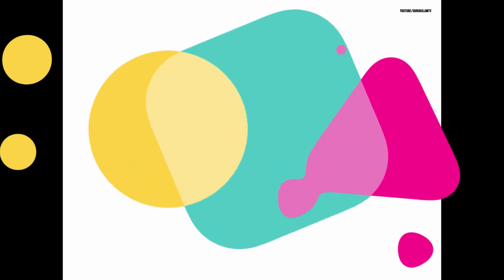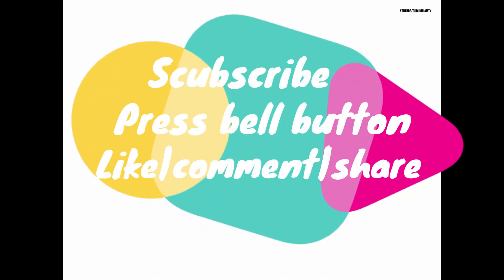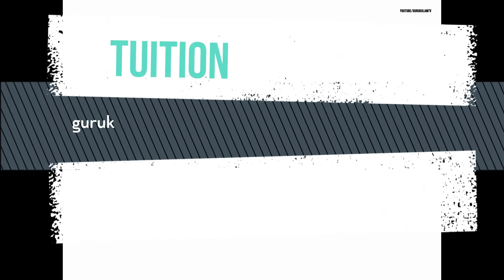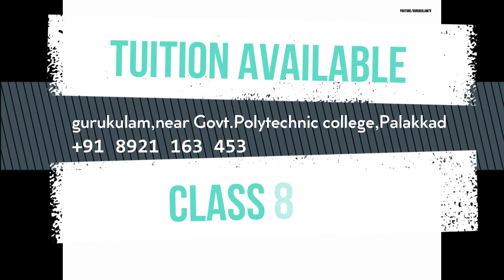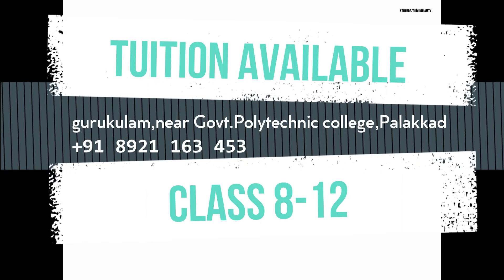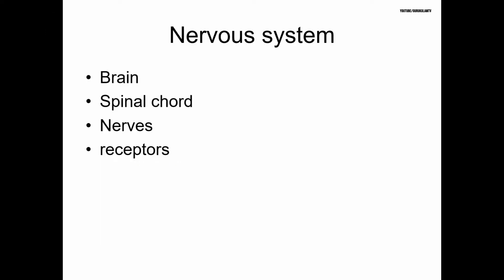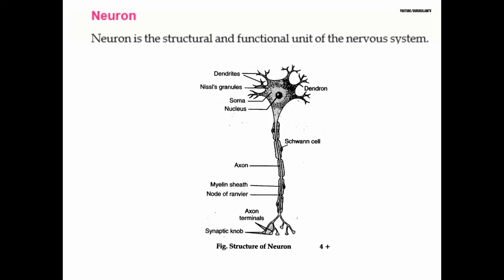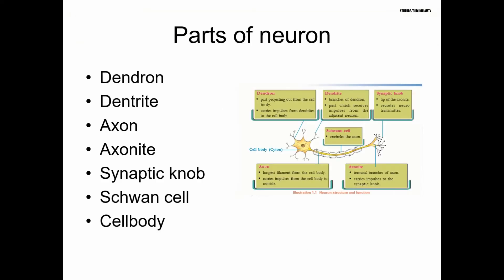Hello students. In the chapter Sensation and Responses, the first topic is stimulus and body response. A stimulus creates a response condition. The central nervous system includes the brain and spinal cord, while the peripheral nervous system is separate. The neuron is the structural and functional unit of the nervous system.